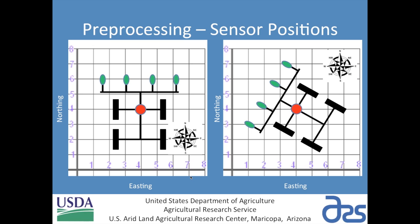This slide demonstrates why it's important to convert to UTM coordinates. With the vehicle positioned at an easting of 4 and a northing of 4, the GPS receiver is in the same location in both orientations shown. However, because of the vehicle's orientation, the sensors have different positions. So we must calculate each sensor's position based on the GPS position, the heading of the vehicle, and the known distances from the GPS receiver to each sensor. The pre-processing tool accomplishes that task.